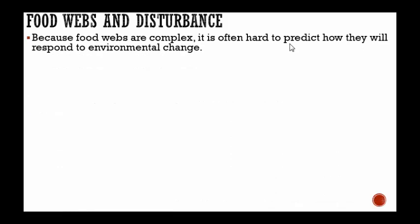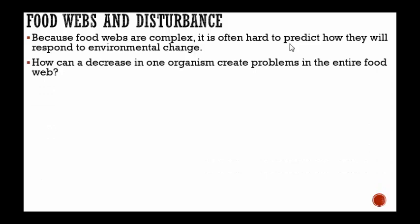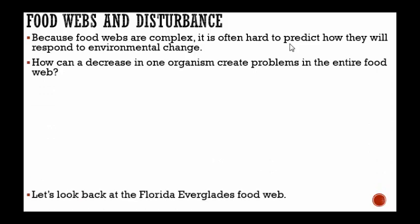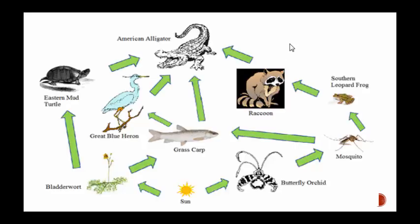Because food webs are very complex, it's often hard to predict how they will respond to an environmental change. Right now, global warming is going on, and if we don't do something to stop that, it's going to have a detrimental effect on food webs in the ocean. Let's go back to the Florida Everglades food web. Let's imagine the bladderwort just disappears. If that happens, what is the Easter mud turtle going to eat? If there's nothing for the Easter mud turtle to eat, it's going to die. If the Easter mud turtle dies, the American alligator still has three other things to eat, but we can already see an effect starting.